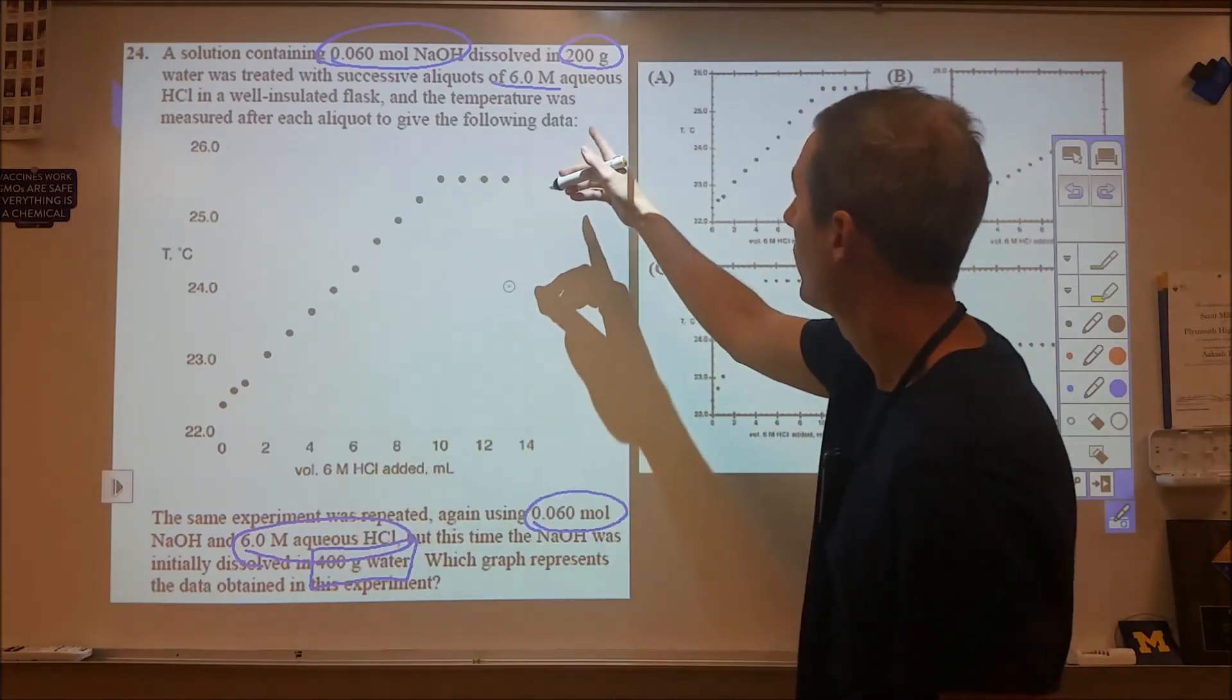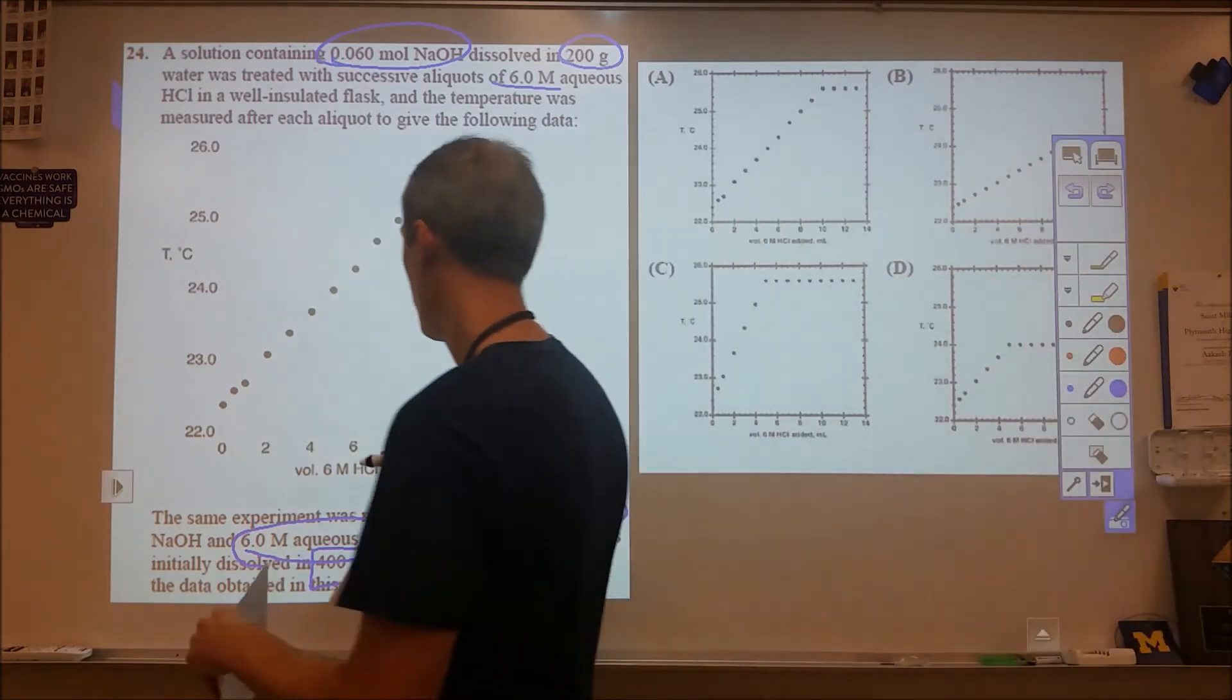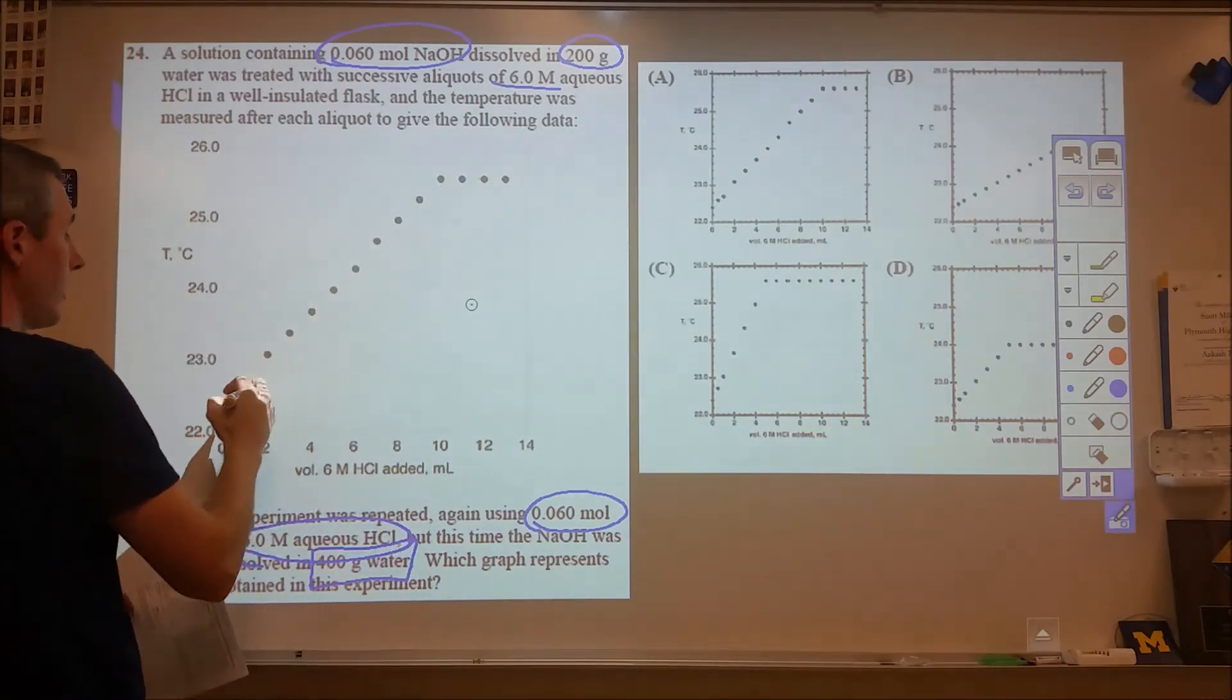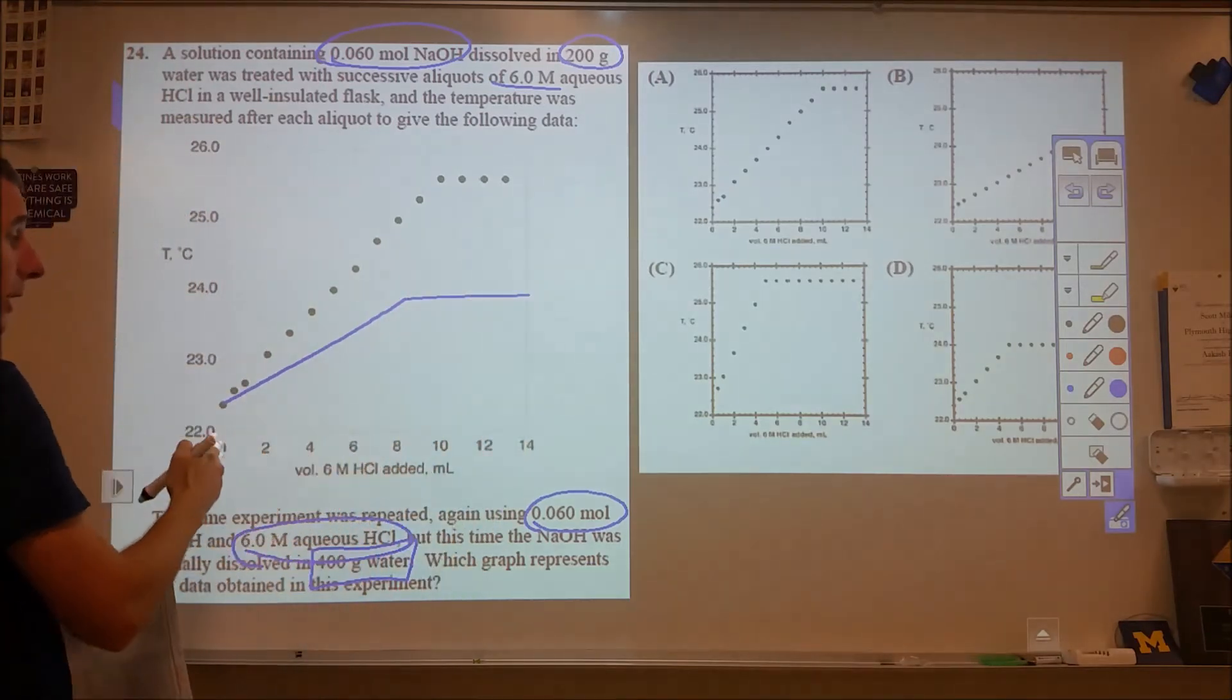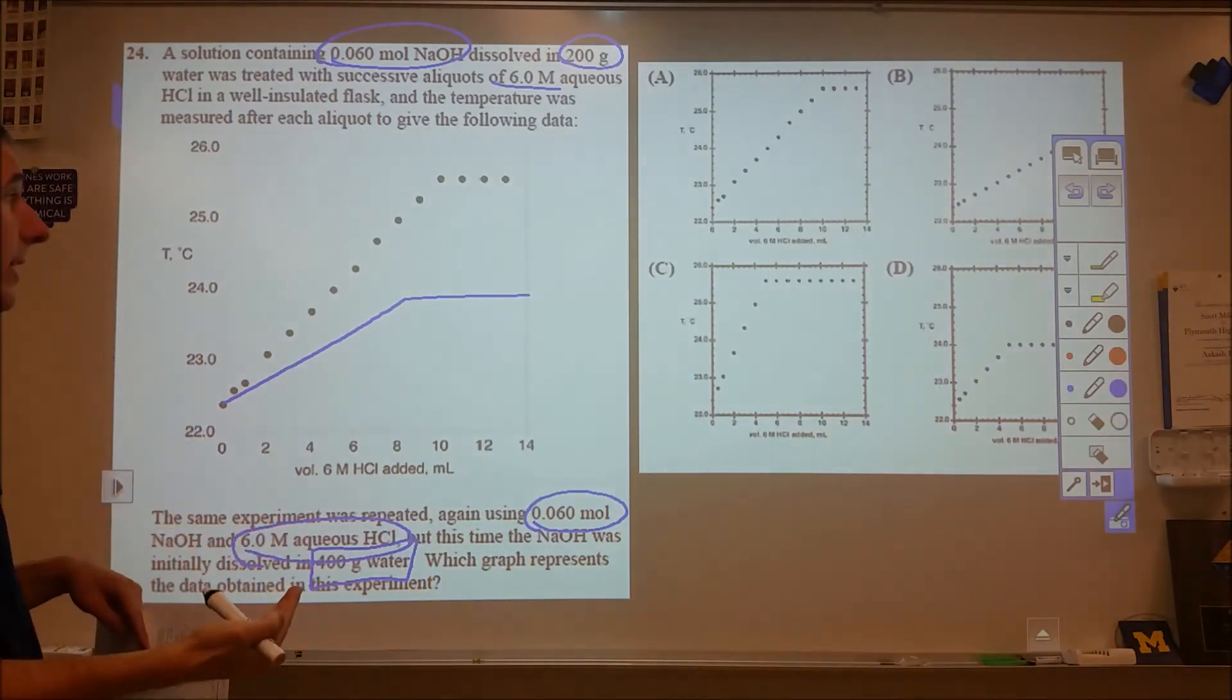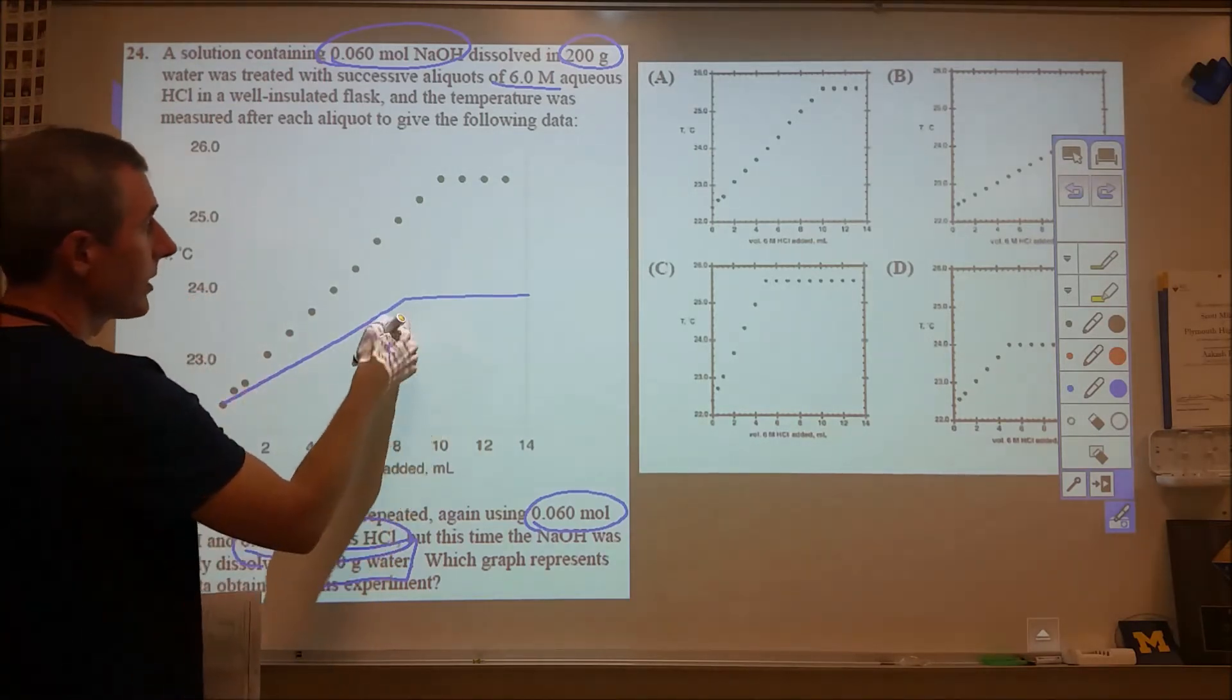This is the big difference. We started with 200 grams, now we're at 400 grams. If we look, what we're doing is doubling the amount of the water to absorb the energy. What we'd expect is instead of going from about 22.4 to about 26.6, we would expect to go up in temperature to about half that amount. It should still take 10 milliliters because the moles of NaOH present and the concentration of HCl being added are the same, but we'd expect to end up somewhere near 24 degrees Celsius by the time we get to 10 milliliters.